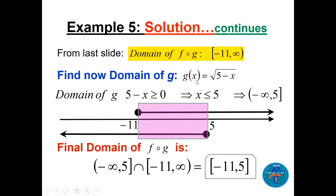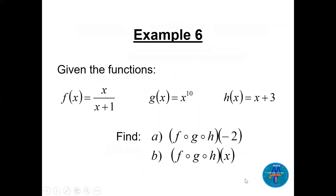We also need the domain of g: 5 − x ≥ 0, so x ≤ 5, giving (−∞, 5]. Intersecting [−11, ∞) with (−∞, 5] gives the final domain of f∘g: [−11, 5].